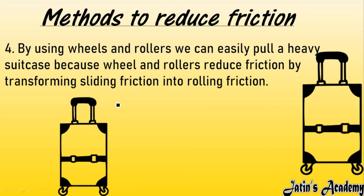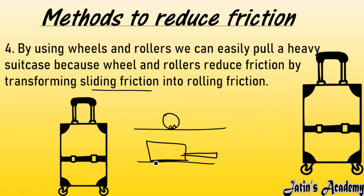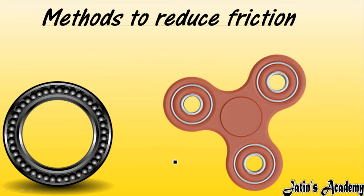Fourth method: use wheels and rollers. We can easily pull a heavy suitcase by putting wheels on it because rolling friction is much less than sliding friction — there is less contact between the object and the surface during rolling, so less interlocking and less friction. Sliding a heavy bag is very difficult because there is more contact with the surface.